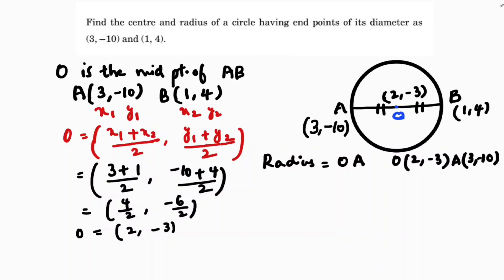So now x1, y1, x2, y2. So OA distance, distance formula is √[(x2 - x1)² + (y2 - y1)²].